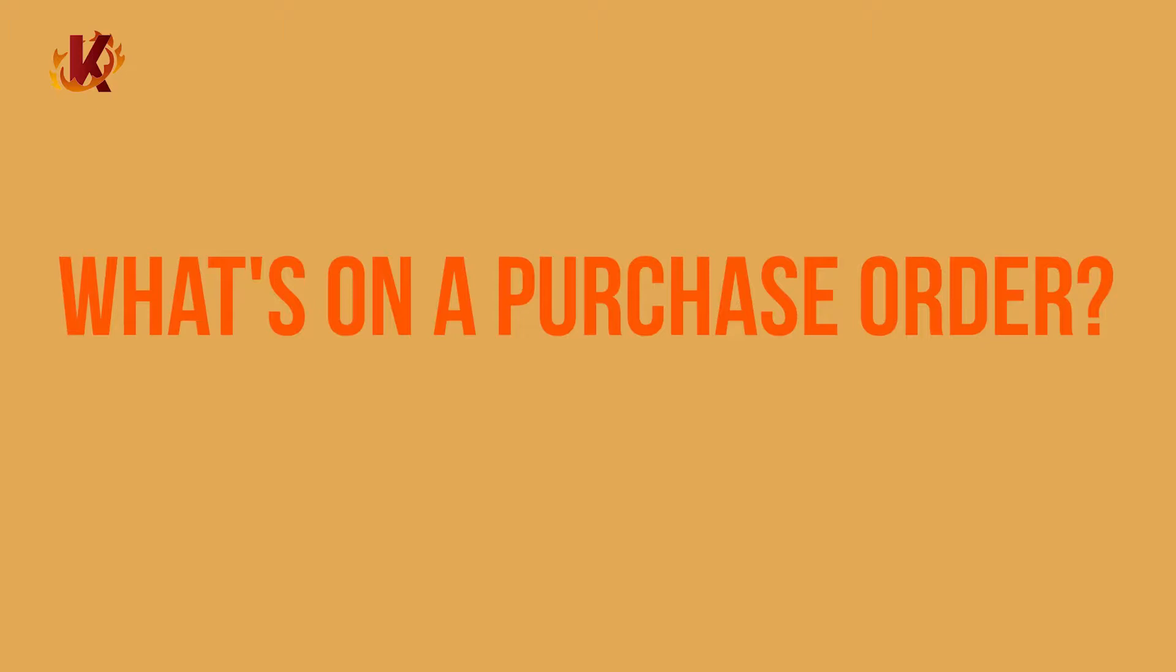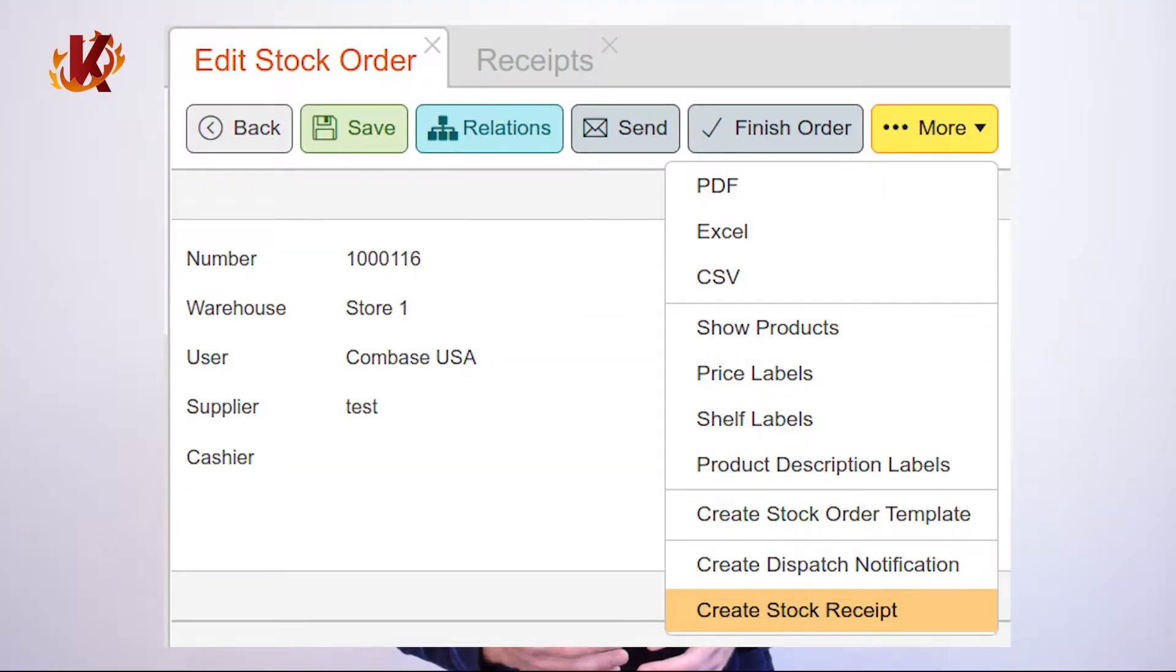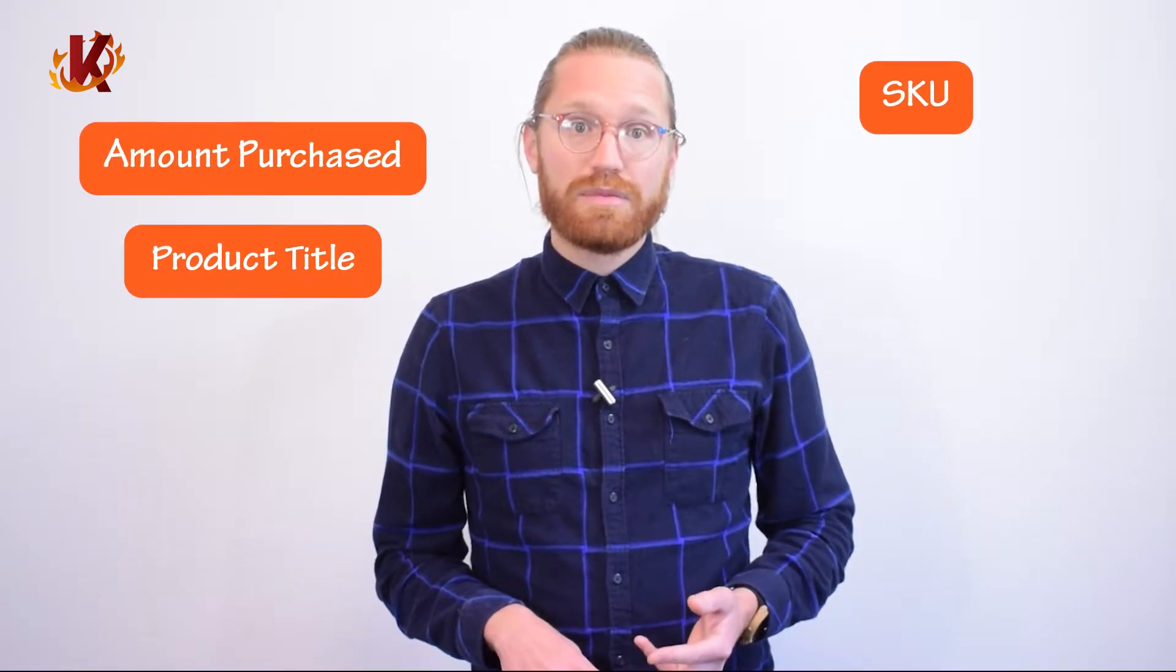Now, each purchase order contains the same pieces of information. Every purchase order receipt, retailers and suppliers will find the amount purchased of a certain item, a product title and description, a SKU number or specific brand names,